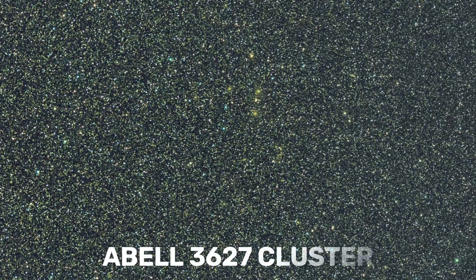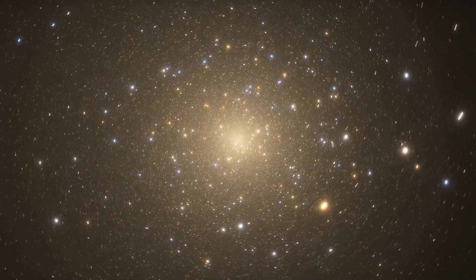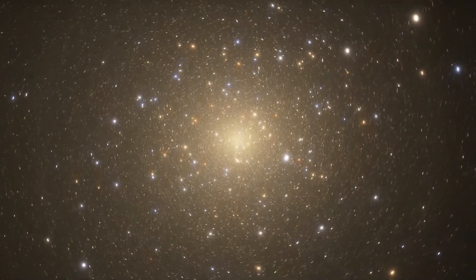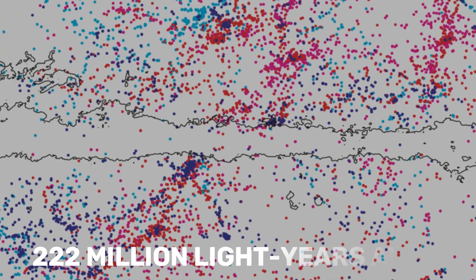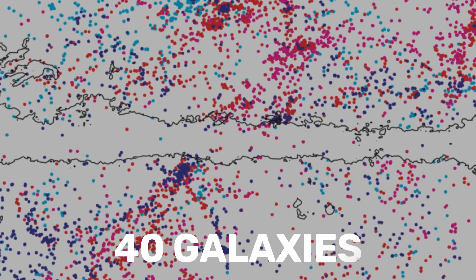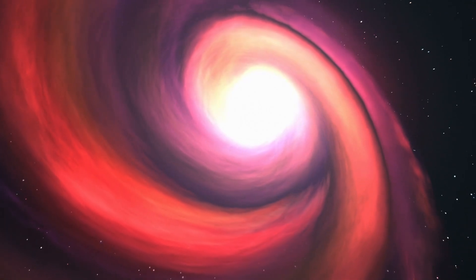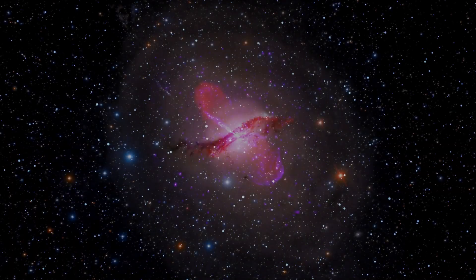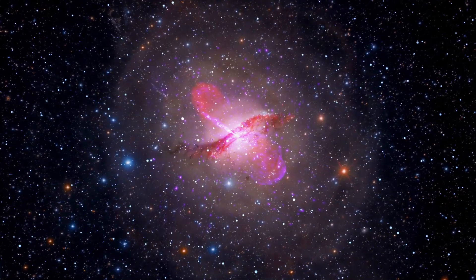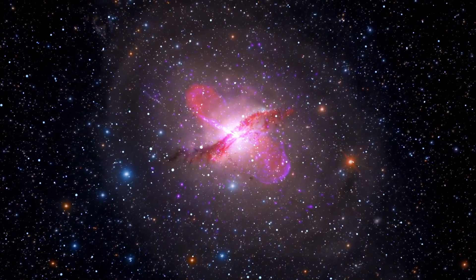Another example of galaxy collisions is the Abel 3627 Cluster, a massive galaxy cluster near the center of the Great Attractor. It's about 222 million light years away from us and contains roughly 40 galaxies. The cluster is also rich in hot gas which emits X-rays. The cluster is merging with another, leading to the creation of a shock front and a cold front within the gas.